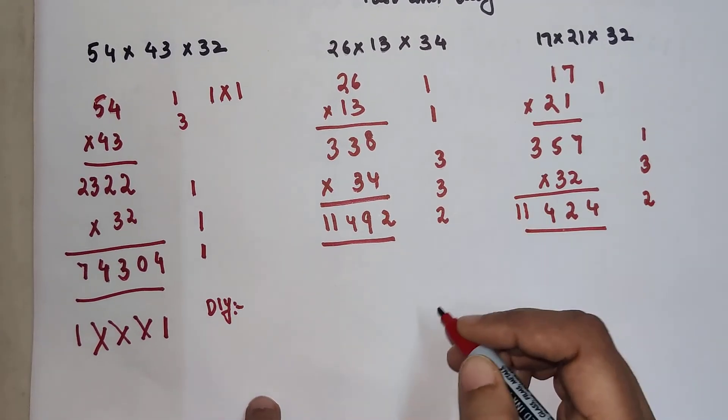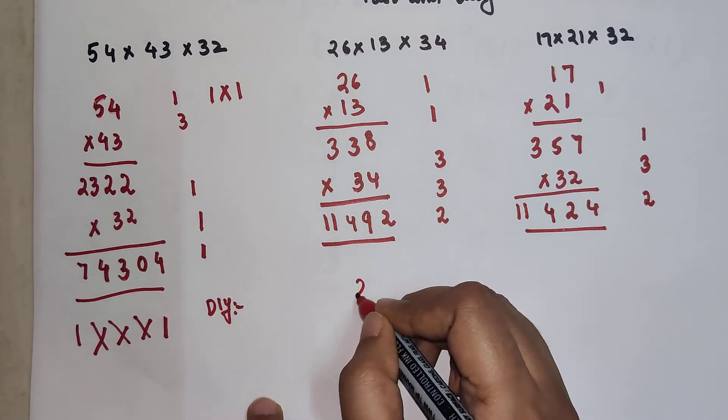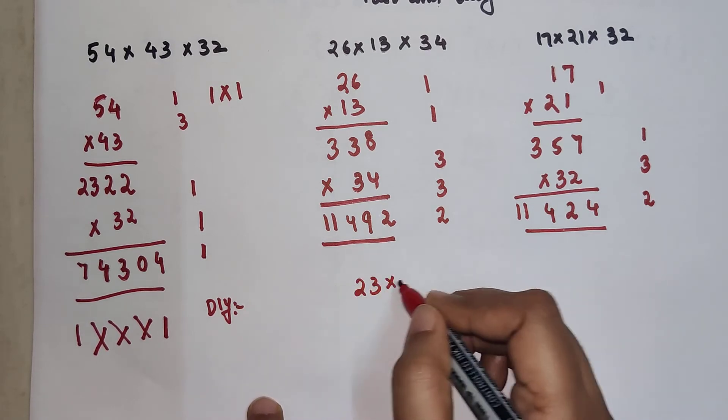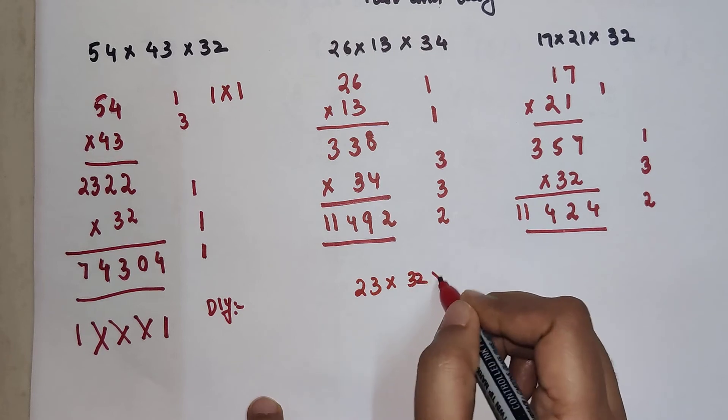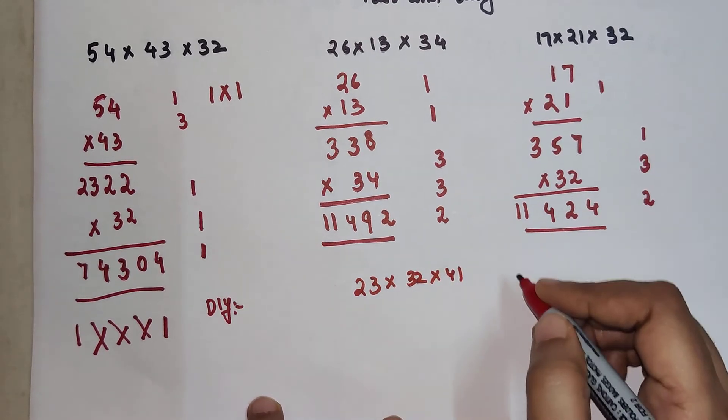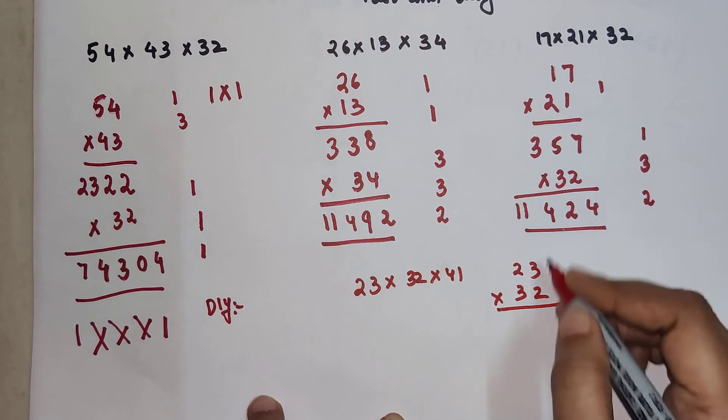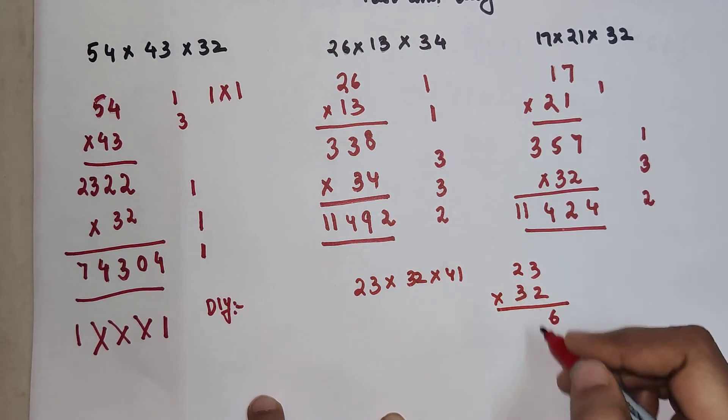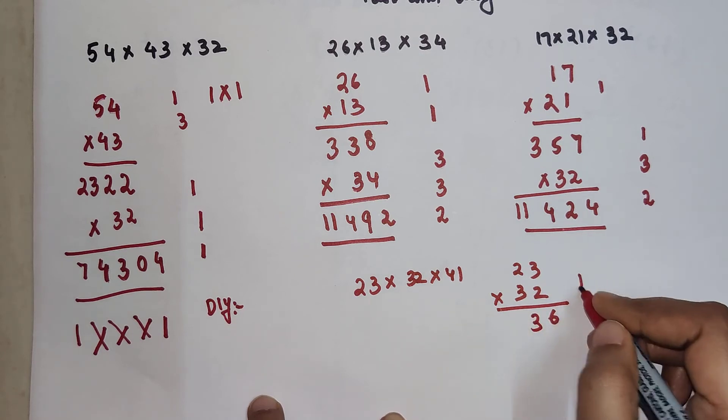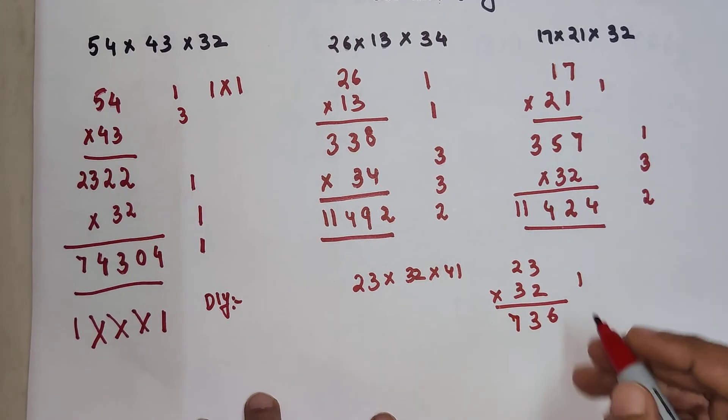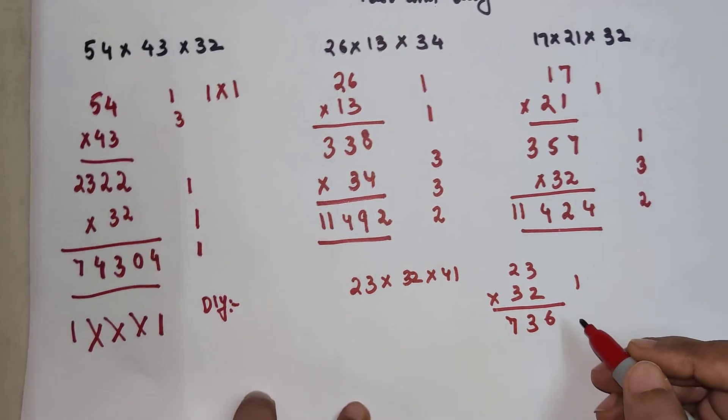Now very quickly let's try and find out what is 23 into 32 into 41. Let's do this. 23 into 32. We get this as 6. 4 plus 9 is going to get you 13, 1 carry. Then 6 plus 1, 7. 736 is the answer for 23 into 32.